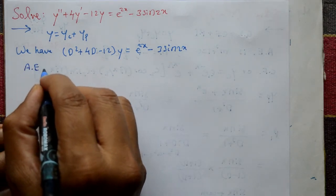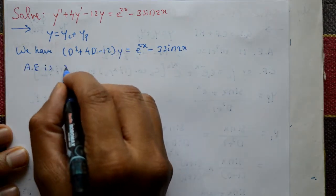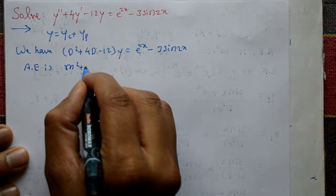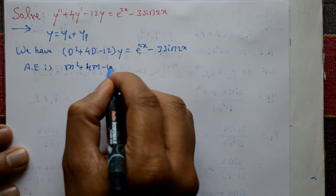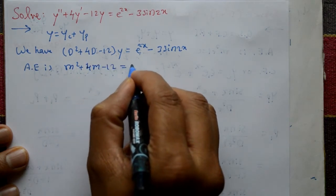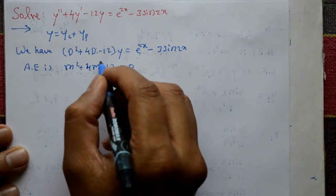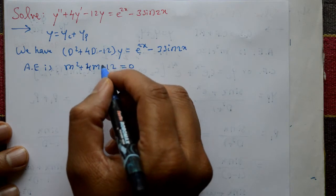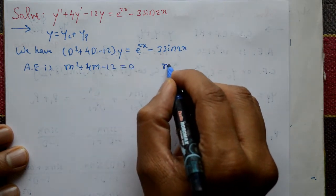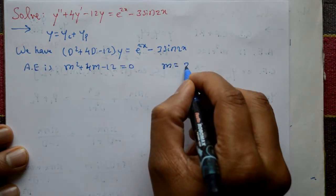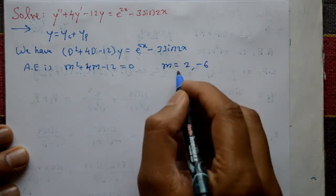The auxiliary equation is m² + 4m - 12 = 0. Using factorization or a calculator, we get m = 2 and m = -6. These are the two distinct roots.